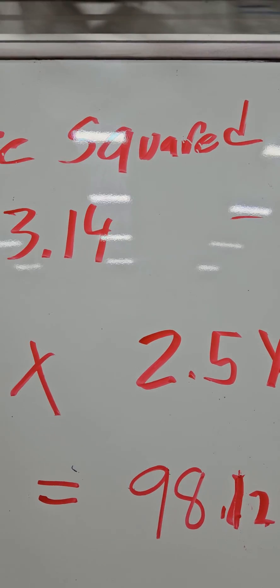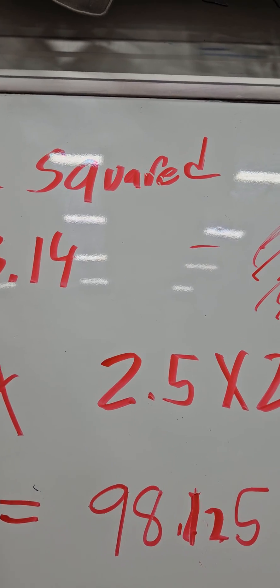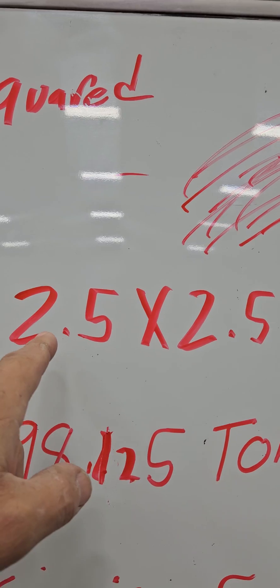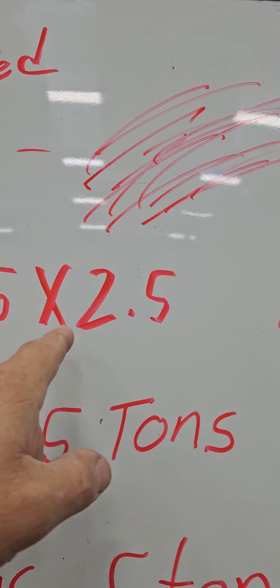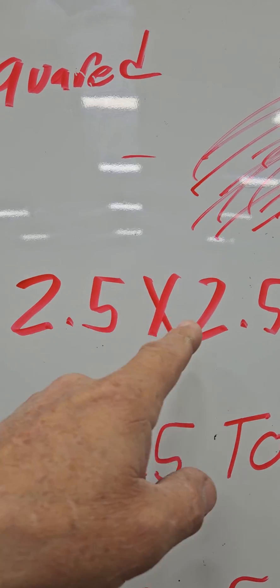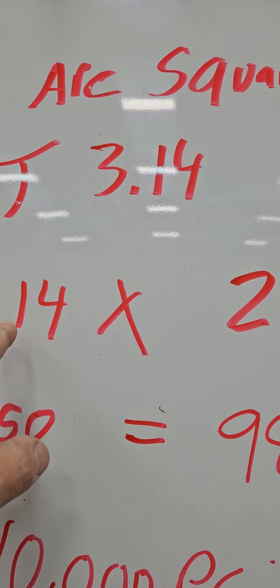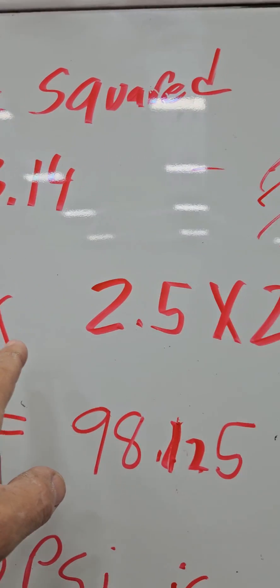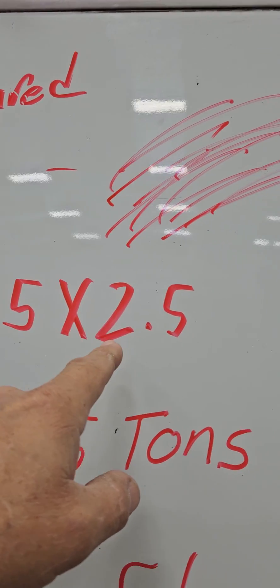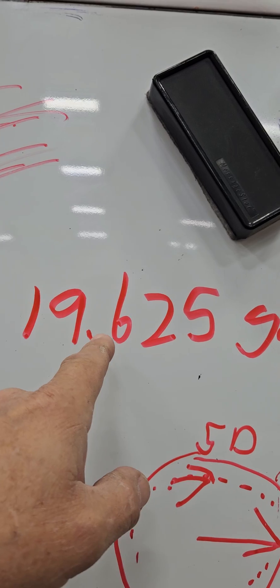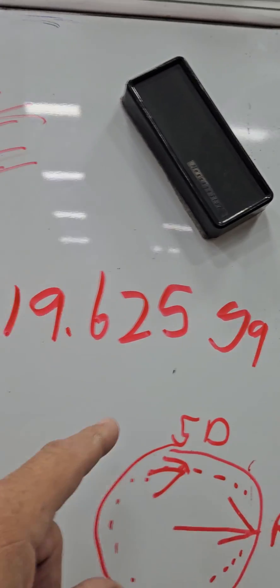So pi times radius, which is going to be 2.5 times 2.5. That's how you square it. So it's pi times radius squared, which is going to equal 19.625 square inches.